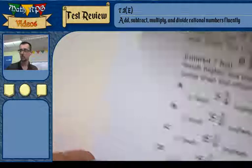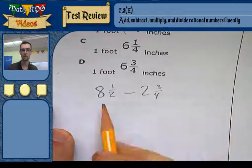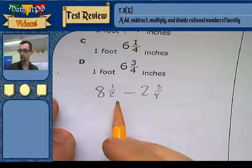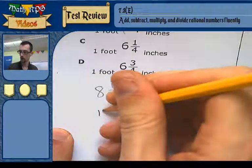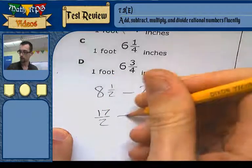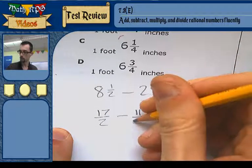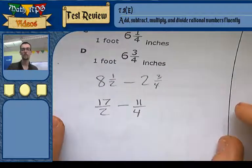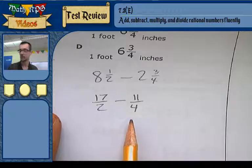So the first thing I've got to do is turn these into improper fractions. So I'm going to multiply 2 times 8 and add 1, that gives me 17 halves. And I'm going to subtract 4 times 2 plus 3 is 11 fourths. Now their denominators are not the same, so I have to get the denominators to be the same.